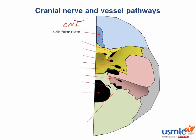Next, on the sphenoid bone, we have the optic canal. This is where cranial nerve 2, as well as its associated arteries — the ophthalmic artery and the central retinal vein — pass through.